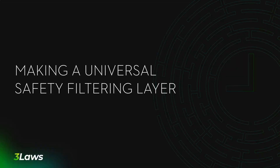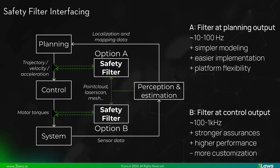Now for the final section on how to leverage this math to create a universal safety filtering layer. The first step is to understand where in the stack such a filter belongs. There are two options, each with their pros and cons. Option A places the filter after the motion planning layer and before the embedded controls layer, in which case the inputs are trajectories, velocities, or accelerations. This layer typically runs at 10 to 100 Hz and allows for simple modeling and great platform flexibility. Option B has the safety layer at the output of the embedded controller right before the motor controllers, running in the 100 Hz to 1 kHz range, allowing for stronger safety assurances and better performance at the cost of more challenging implementation and modeling. Option A will result in a significantly more universal safety layer, while option B can be appropriate for specific applications where safety and performance are especially critical.